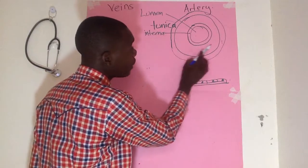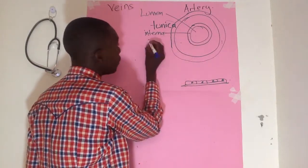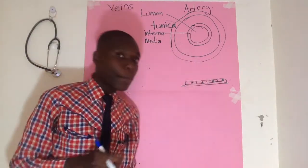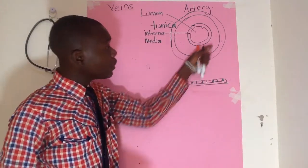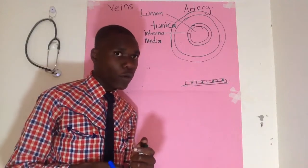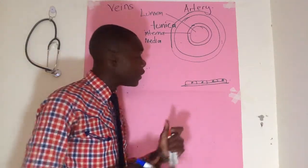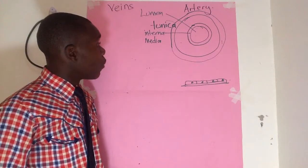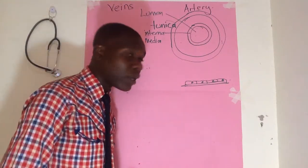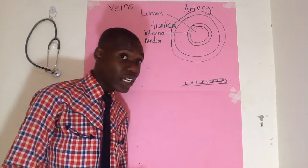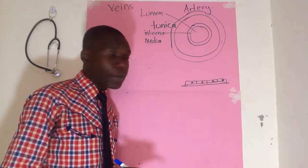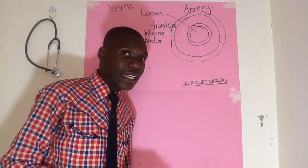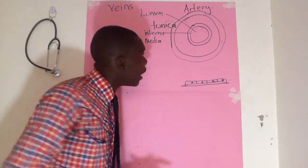The next layer is the tunica media. The tunica media is specifically made up of smooth muscle, and within the smooth muscle there are strands of elastic fiber, so it is smooth muscle mixed with elastic fiber — to allow elasticity of the blood vessel. In larger blood vessels, for example the conducting vessels like the aorta, you would find extra lining of elastic fiber forming a layer known as the elastic lamina.